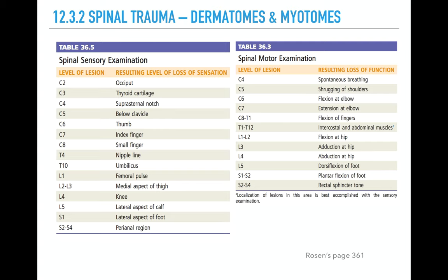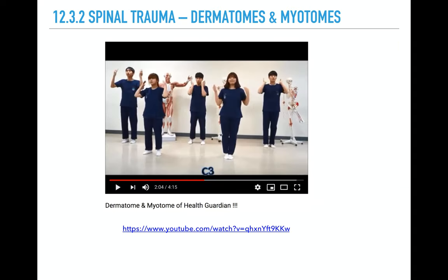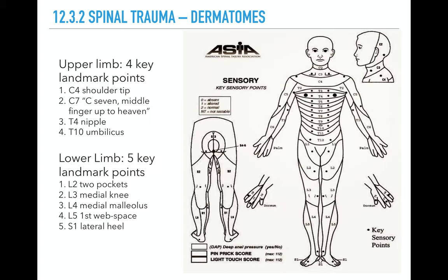Dermatomes and myotomes — what a nightmare to try to remember. How on earth are you going to memorize these? Even when you do, you've forgotten it the next day. You can look at this video for a creative way of trying to remember dermatomes and myotomes. The take-home message is to have key landmark points: C4, C7 up to heaven, your nipple is T4 and belly button T10. Memorize those key landmarks and then you can fill in the gaps to help you get the full picture of the dermatomes.